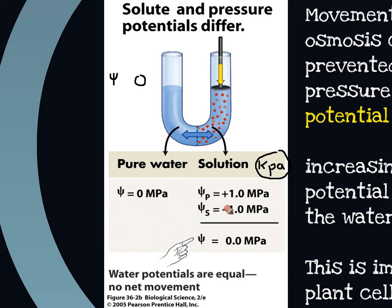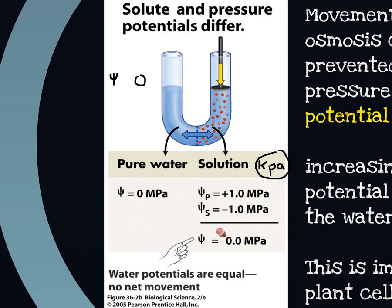If we've got a solute potential of negative one and a pressure potential of positive one, we still get a water potential of zero even though there are some solutes. Water potential is the potential for water to move from an area; the overall water potential is a combination of pressure potential and solute potential. In many instances — especially with animal cells — pressure potential doesn't come into play, so water potential effectively equals solute potential. But technically the overall water potential is always a combination of both: solute potential always negative, pressure potential always positive.